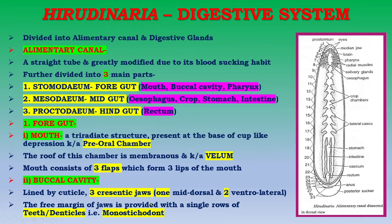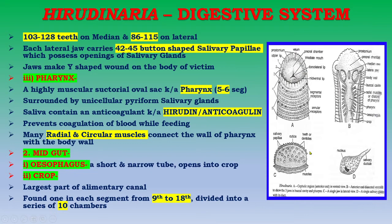This condition of teeth arranged on one side is known as monostycodont. As you can see in the diagram, these are the teeth or denticles. There are 103 to 128 teeth on the median jaw and 86 to 115 on the lateral jaw. Each lateral jaw carries 42 to 45 button-shaped salivary papillae which possess openings of salivary glands. The jaws make a Y-shaped wound on the body of the victim.